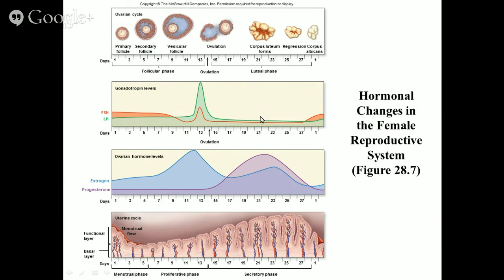With no corpus luteum, there's no progesterone. But now the corpus albicans has died and a brand new primary follicle forms. As the follicle grows, the cells inside produce estrogen — so as the follicle gets bigger and bigger, estrogen rises dramatically. This follicular growth is driven by FSH, follicle stimulating hormone, released from the pituitary gland. FSH stimulates the follicle to increase in size. Once the job is done and the follicle has grown enough, FSH tapers off because there's no need for further growth.